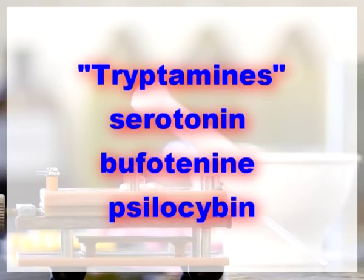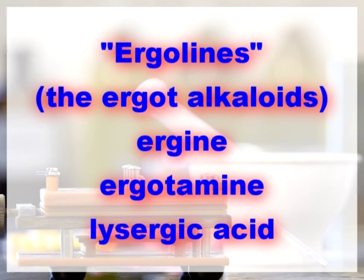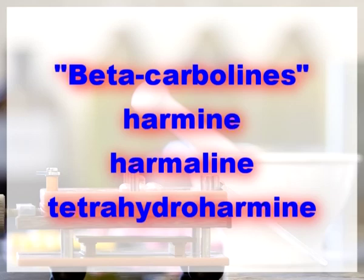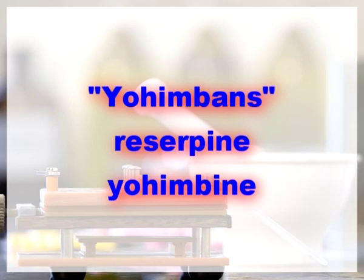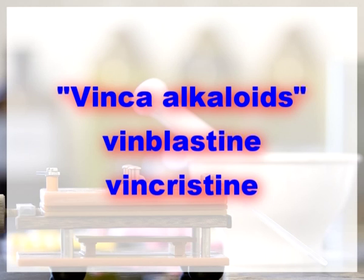Indole group: first the tryptamines — serotonin, bufotenin, psilocybine. Ergolines — ergot alkaloids, ergine, ergotamine, lysergic acid. Beta-carbolines — examples are harmine, harmaline, tetrahydroharmine and yohimbine. Yohimbine — example is reserpine and yohimbine. The vinca alkaloids — well-known examples are vinblastine and vincristine.